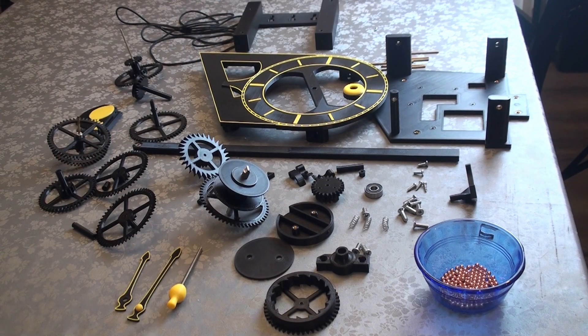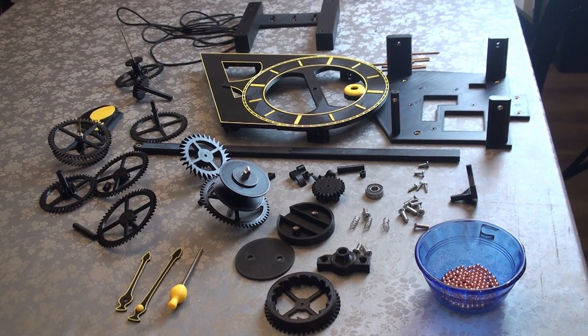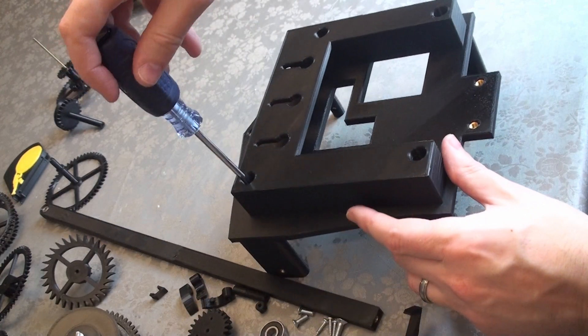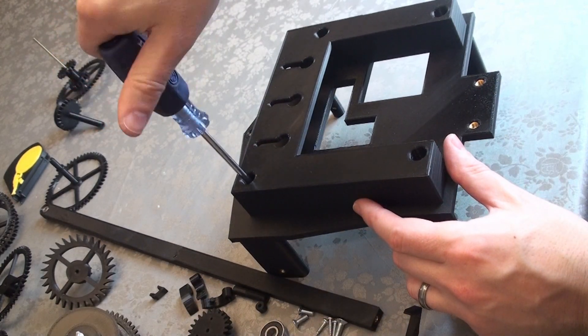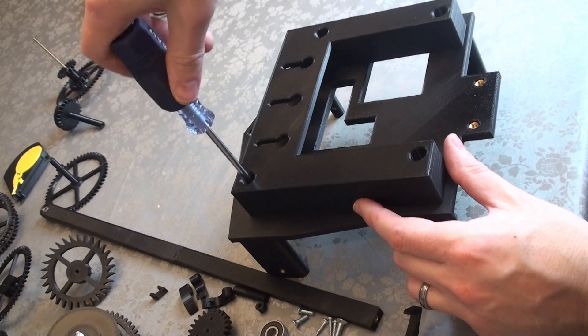The last piece to pre-assemble is the ratcheting mechanism. Screw the clicks into the ratchet pinion. Be sure the head of the screws goes into the countersunk part of the click and doesn't protrude far above, otherwise it will bind up. The screws should be tight enough to hold it all together, but loose enough to allow those clicks to move freely.